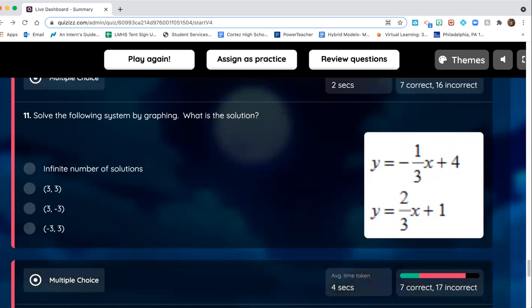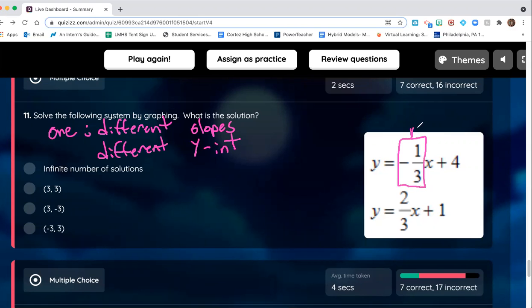Number of solutions. Let's do a quick refresher. If we have one solution to our system, that means we have different slopes and also different y-intercepts. Since this slope here is negative one-third and this slope for the second equation is two-thirds, we know that the slopes are different, which is a good thing. So I know there's only one solution. So it's definitely not infinitely many solutions.